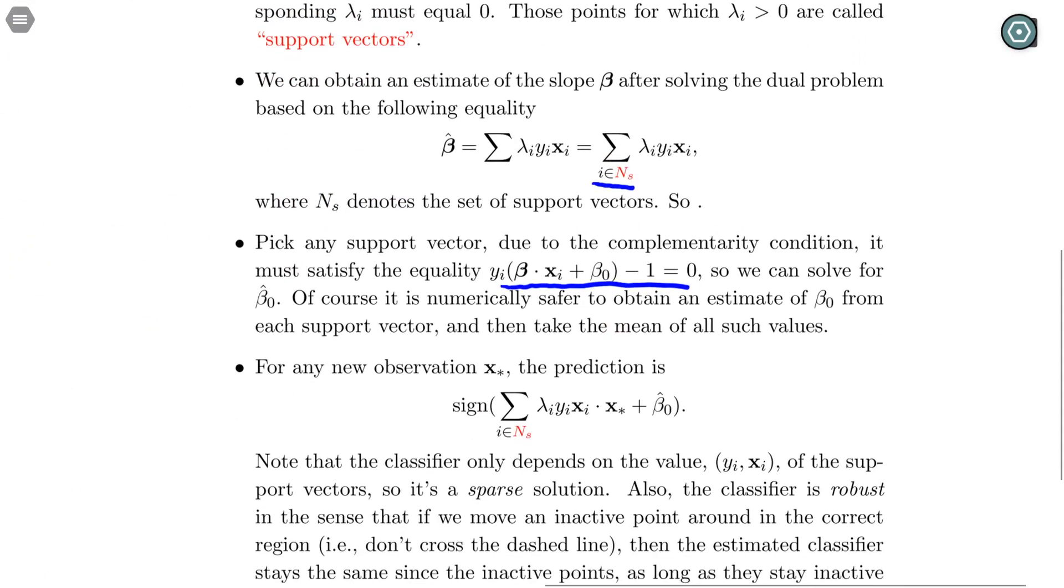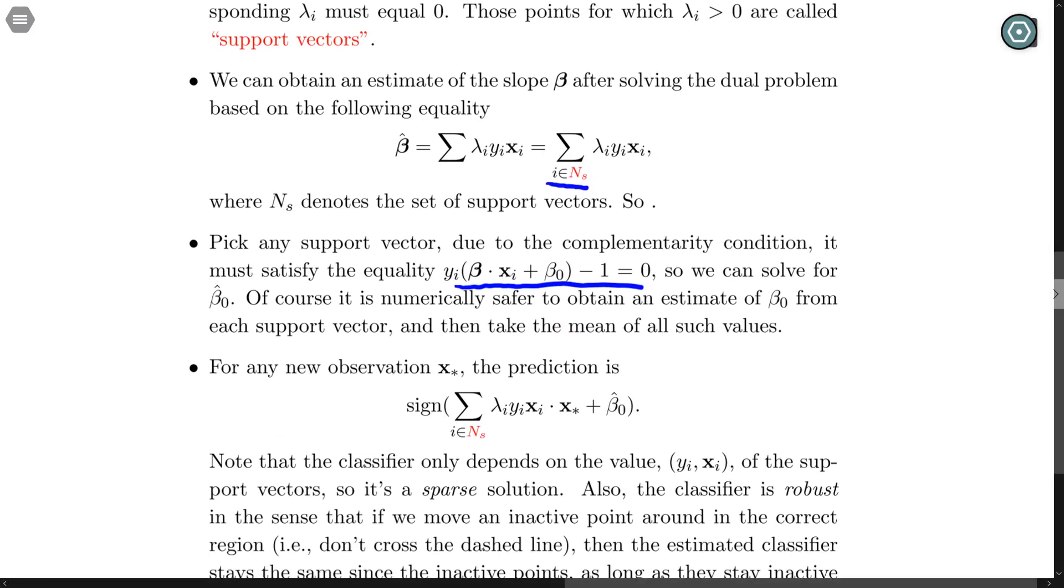So that means we're just going to evaluate, and this is basically just beta times x star plus beta_0. And we just look at sign, and then based on the sign, we're going to predict the y star to be either 1 or minus 1.